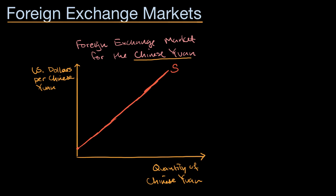What about the demand curve? The demand curve is going to look like a lot of demand curves we've seen. If the price of a Chinese yuan is high, very few people are going to demand it. And as the price of the Chinese yuan in terms of dollars is lower and lower, more and more people might demand more Chinese yuan. So this is what a demand curve might look like. And as you could imagine, this intersection point is our equilibrium point, and it would tell us our equilibrium exchange rate and our equilibrium quantity.